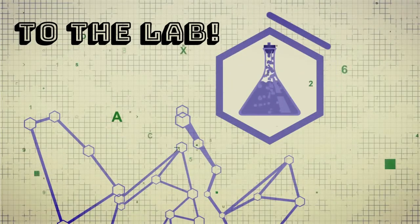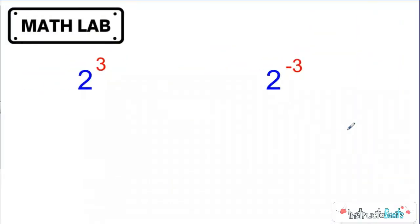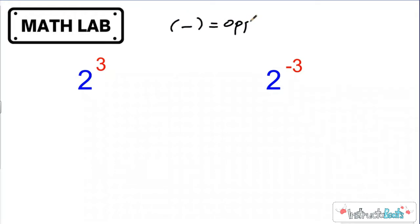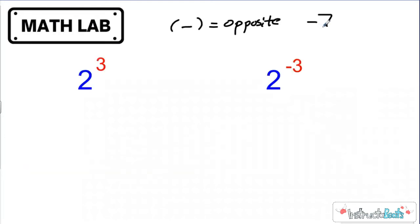To understand what we need to do, we need to go to the math lab. We need to understand what a negative sign means. If you go all the way back to our Integers lesson, we learned that a negative sign really just means the opposite. A negative seven is really just the opposite of positive seven. If you are subtracting from something, you are doing the opposite of addition.